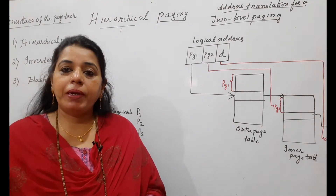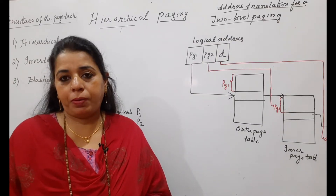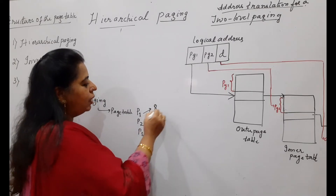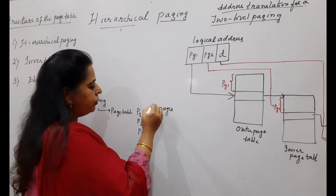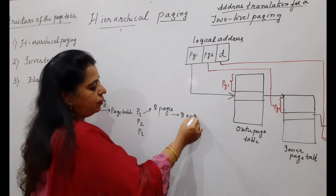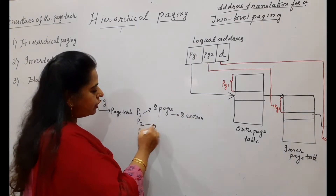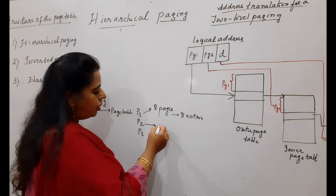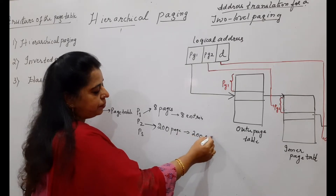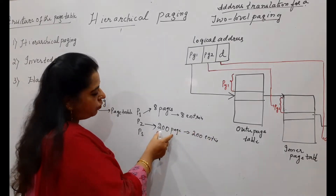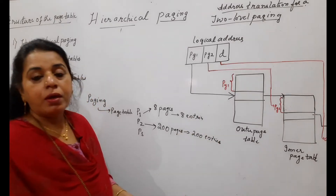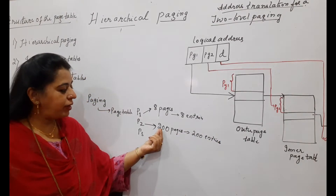How many entries will be there in a page table depends on the number of pages for that particular process. For simplicity, if process P1 has eight pages, the page table of P1 will have only eight entries. If process P2 has 200 pages, the page table will have 200 entries. So: number of pages equals number of entries in the page table.